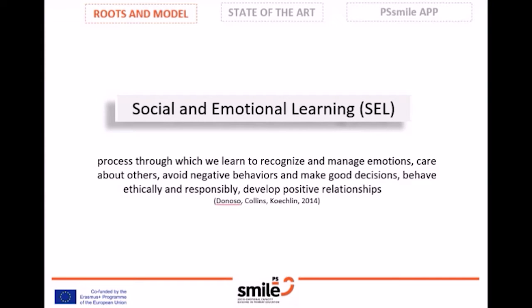Social and emotional learning is the process through which we learn to recognize and manage emotions, care about others, avoid negative behavior and make good decisions, behave ethically and responsibly, and develop positive relationships. It is considered as the learning that unites all areas of human life since its beginning: social, emotional, academic, cognitive and physical.